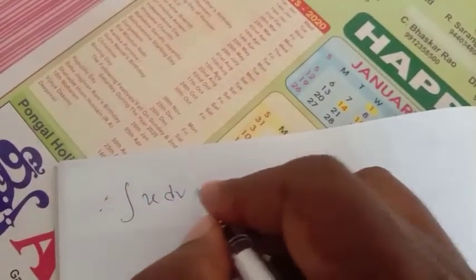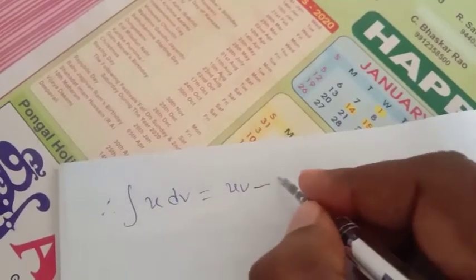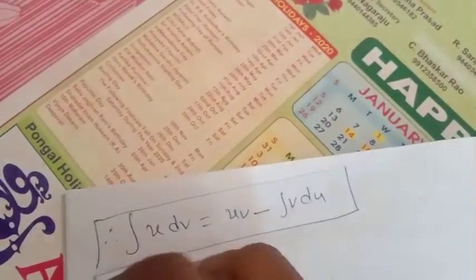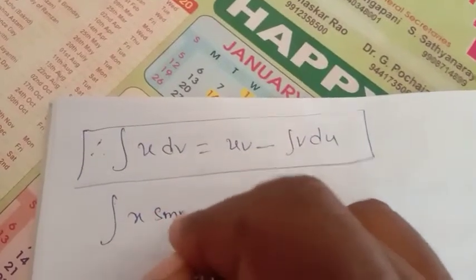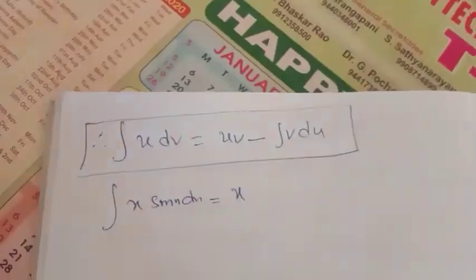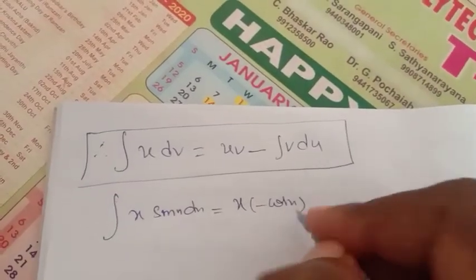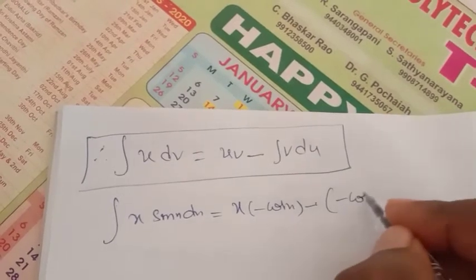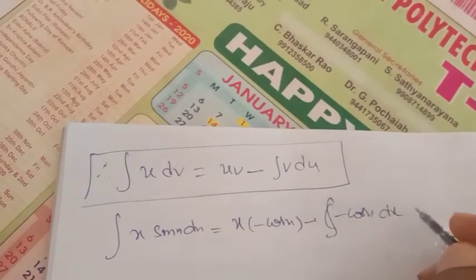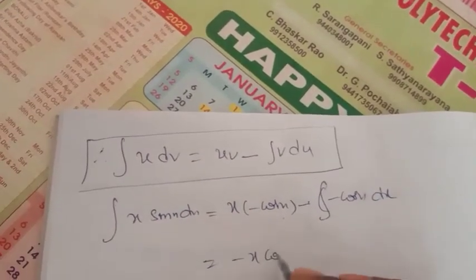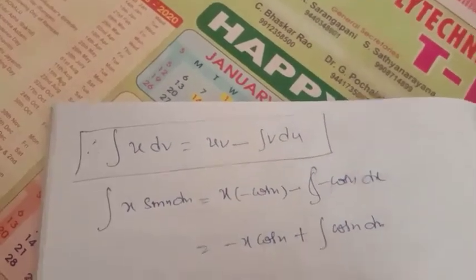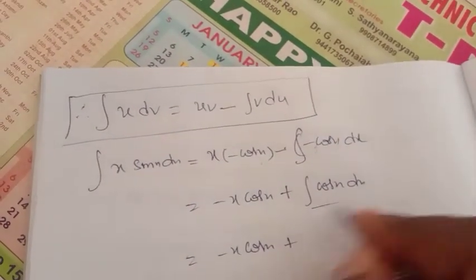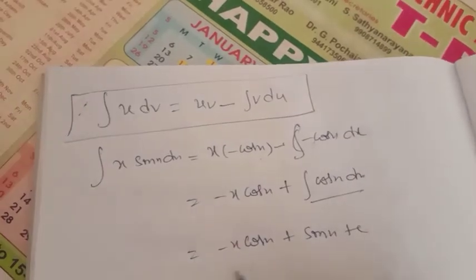Using integration by parts, we have integral u dv equals uv minus integral v du. So integral x sin x dx equals u value x, into v value minus cos x, minus integral of v value minus cos x into du value dx. That equals x into minus cos x, minus x cos x, minus into minus gives plus, so plus integral cos x dx, which equals minus x cos x plus integral cos x dx equals minus x cos x plus sin x plus c. That is the answer to the second problem.